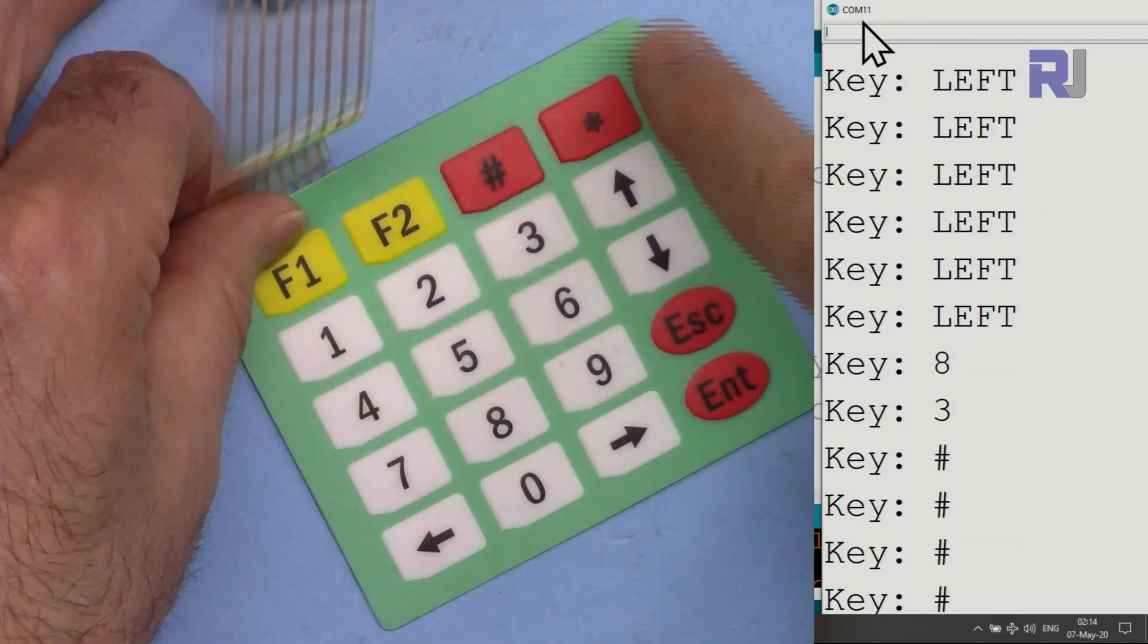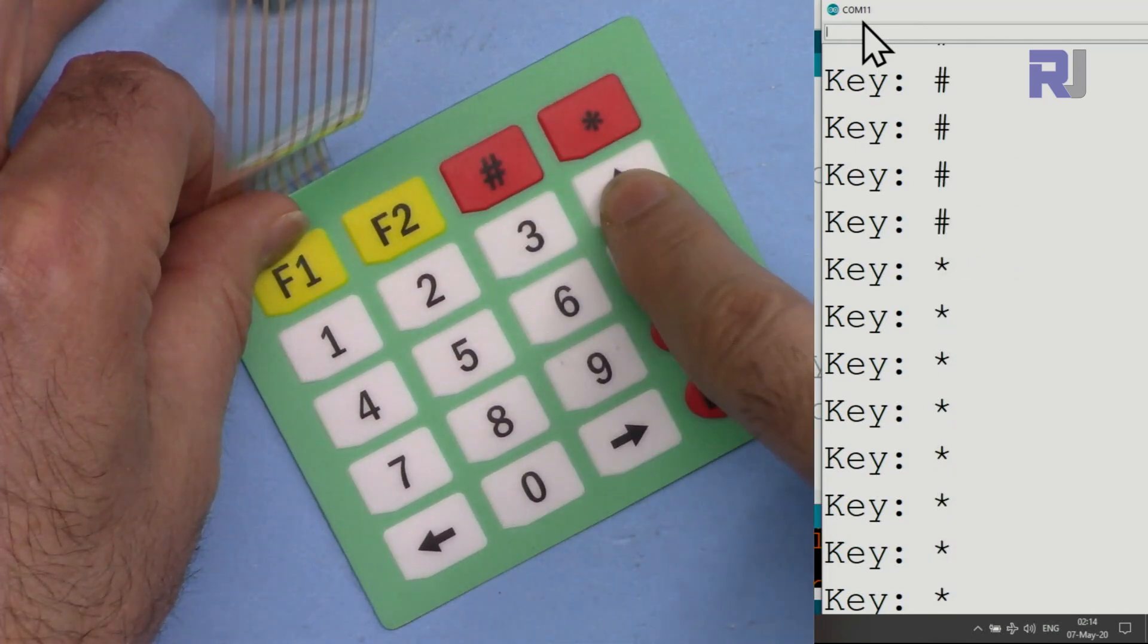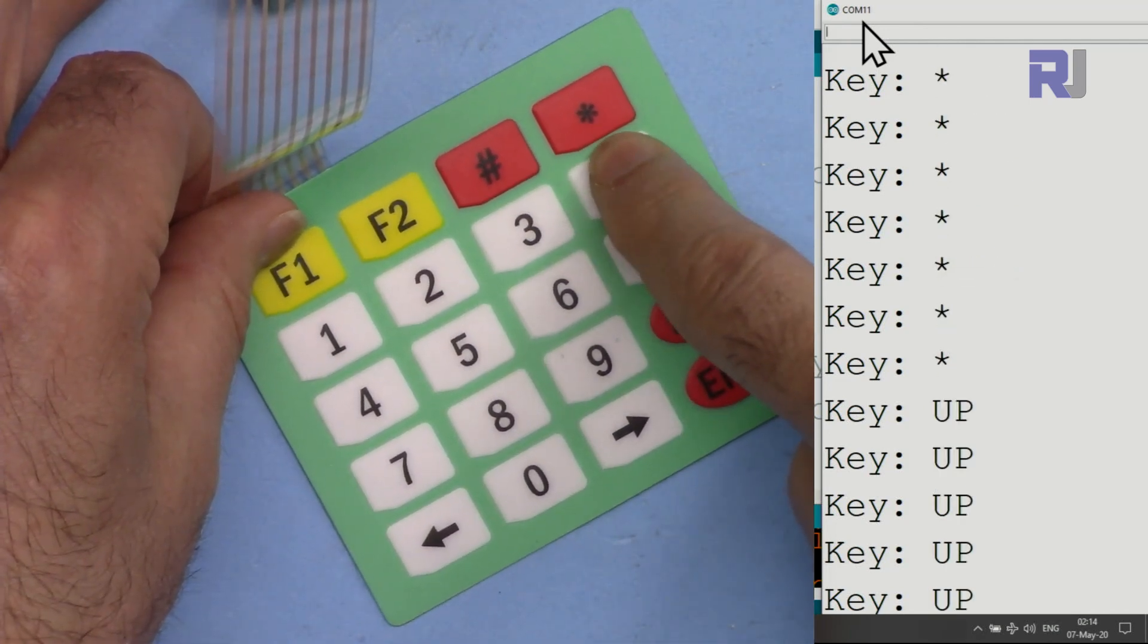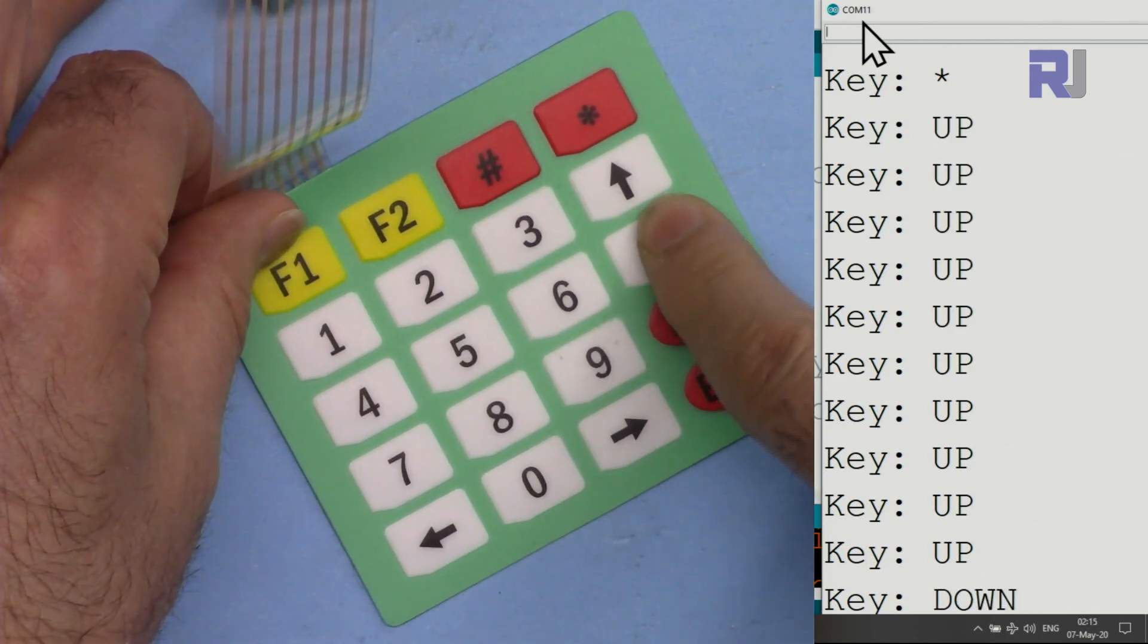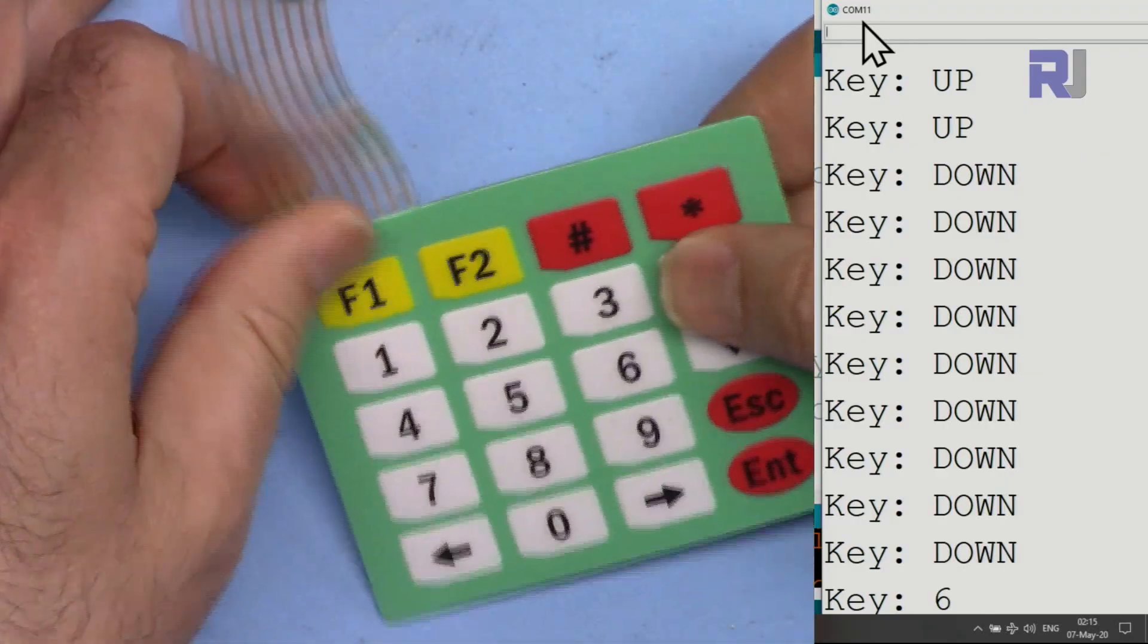Star, hash, and then asterisk, this star is asterisk, and then here this is up and then down. So perfectly responding.